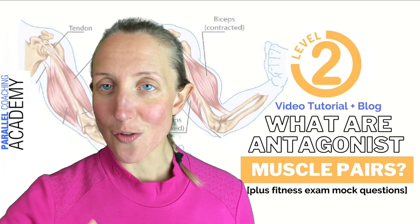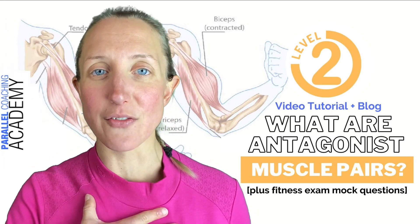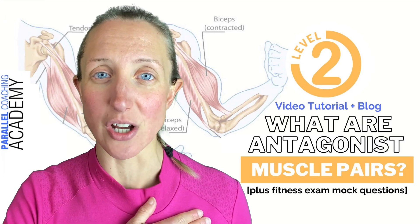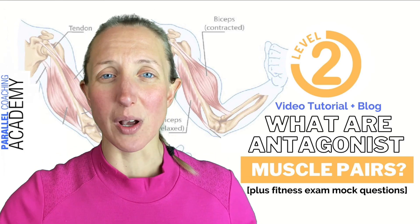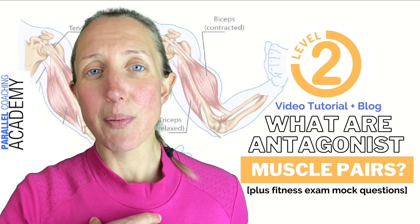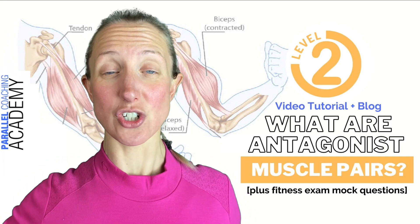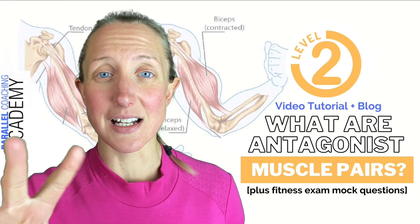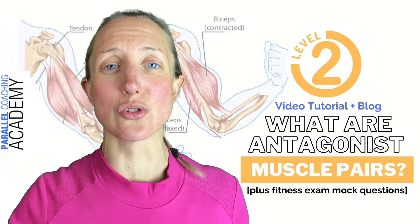Moving up the body to the chest: the pectoralis major works by creating horizontal flexion, performing a pec fly motion and bringing the arms together. The opposing action is horizontal extension, which works the mid traps. So your antagonistic pair here is pectoralis major and mid traps, and it all happens on the horizontal plane.